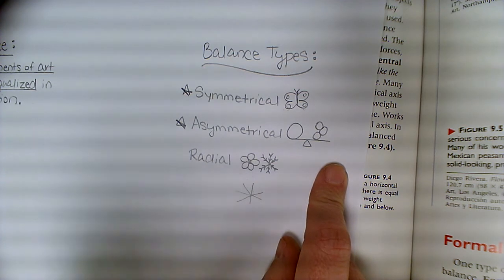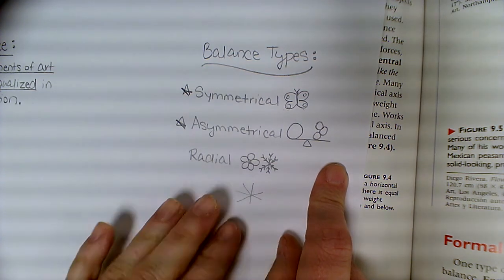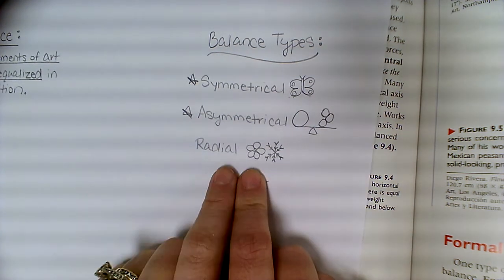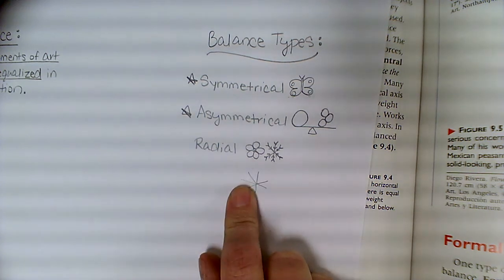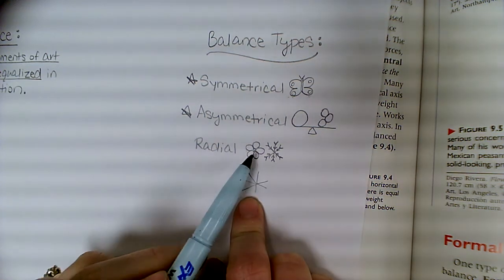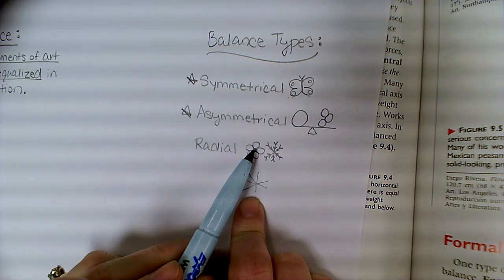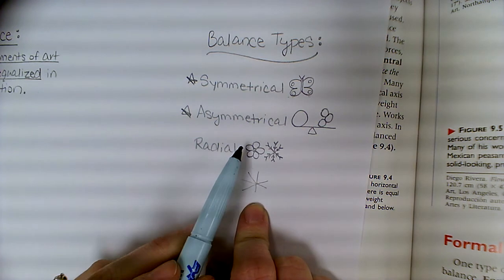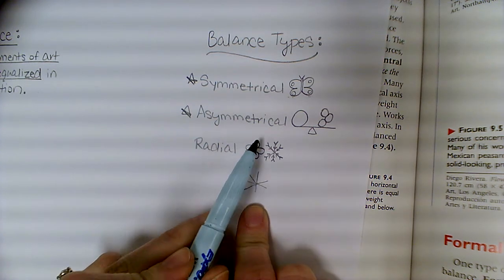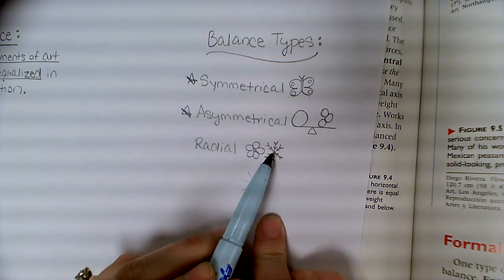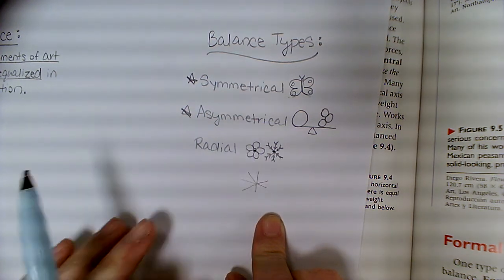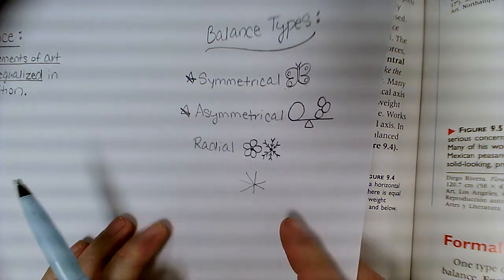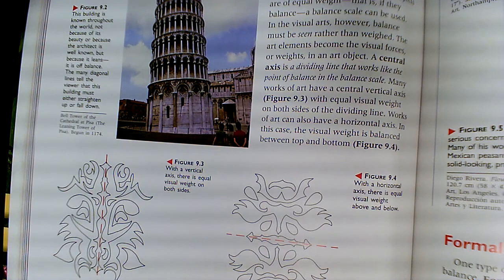The third type is radial balance, where it is balanced from a central point radiating out and around. I like to think about looking at a flower or a snowflake — everything's radiating out from a single point in the middle.